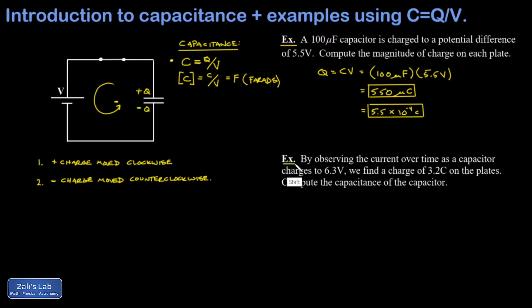In our second example, we're told that by observing the current over a period of time as a capacitor charges to 6.3 volts, we're able to measure a total charge transfer of 3.2 coulombs. So I actually did this in the lab a couple days ago, and I'll just go ahead and link to that video right now. So in this problem, we know the potential difference and we know the amount of charge separation on the plates. So we should be able to get the capacitance from our basic definition, charge per volt. And so I put in my 3.2 coulombs of charge, my 6.3 volts of potential difference, and I end up with 0.51 farads.